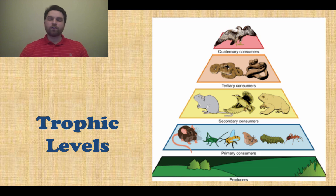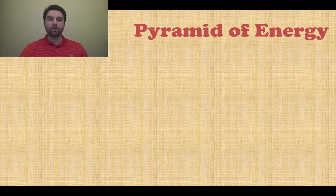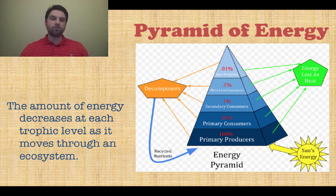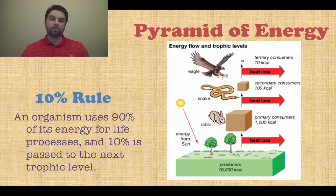Each pyramid is set up with trophic levels. The base is made up of the most organisms, followed by primary consumers, secondary, and tertiary consumers at the top, where there are the fewest organisms. Looking at the pyramid of energy, if primary producers have 100% of the energy, the amount passed to the next level gets less and less each time — according to the 10% rule. An organism uses 90% of its energy for life processes and only 10% gets passed to the next trophic level.